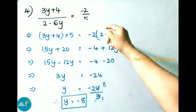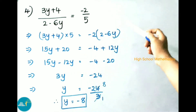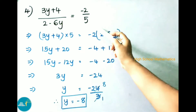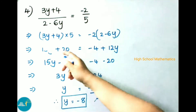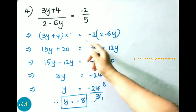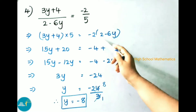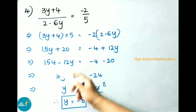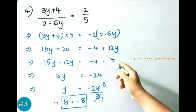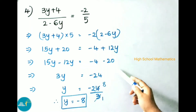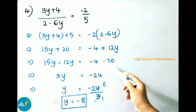See now question number 4: (3y + 4) / (2 - 6y) = -2/5. Now we have to do cross multiplication: (3y + 4) × 5 = -2 × (2 - 6y). That implies 15y + 20 = -4 + 12y. That implies 15y + 12y on transposing is minus 12y, equals -4 + 20 on transposing is minus 20. That implies 15y - 12y = 3y = -4 - 20.